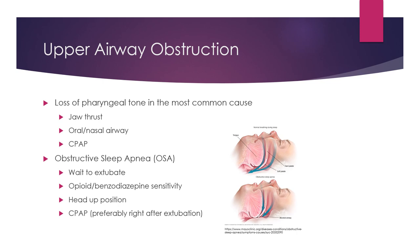Obstructive sleep apnea is another common cause of upper airway obstruction. Most patients with OSA are undiagnosed at the time of surgery, so you must remain vigilant. If you know a patient has sleep apnea, wait to extubate until they are fully awake and following commands, as they are sensitive to opiates and benzodiazepines. Multimodal opiate-sparing analgesia should be used, and patients should be positioned head-up. It is recommended that OSA patients bring their own CPAP from home. For morbidly obese patients, extubation directly to CPAP is recommended.